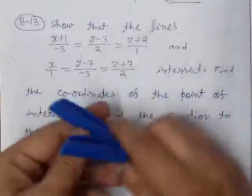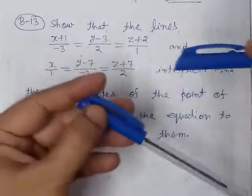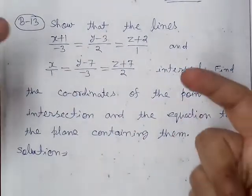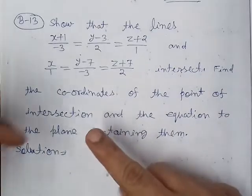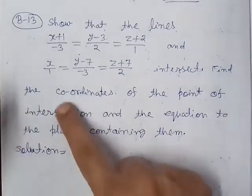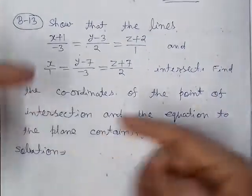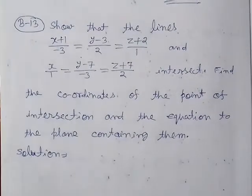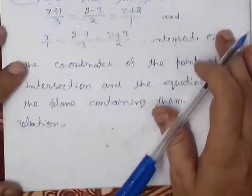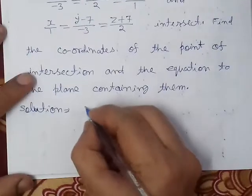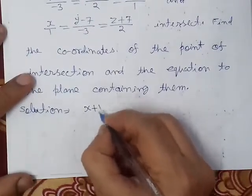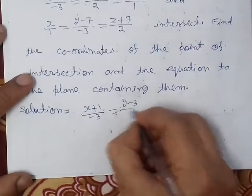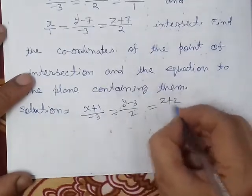First of all, we have to prove that both lines intersect. For this method, we use the parametric form. We write the equations of the given lines. The first line equation is: (x+1)/(-3) = (y-3)/2 = (z+2)/1, which we call equation number 1.